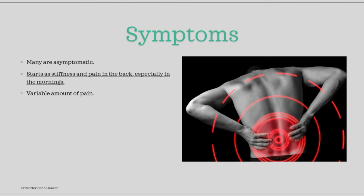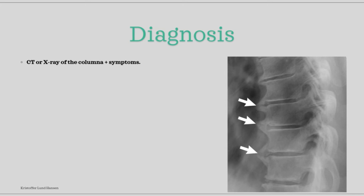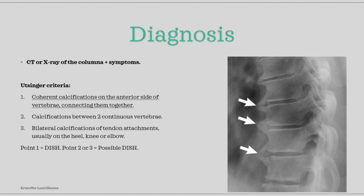Diagnosis of DISH is based on a CT or X-ray of the columna. Together with positive symptoms, it is used to diagnose the disease. A common classification system used is the Oetzinger criteria. There are three different points. Point 1 can safely diagnose DISH, while point 2 or 3 means that there is a high possibility of DISH.